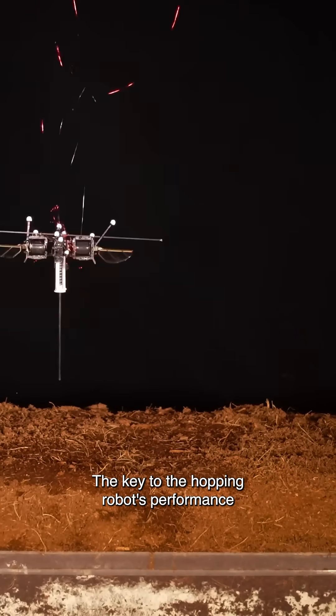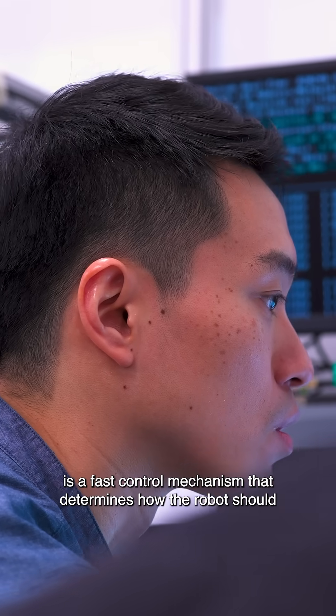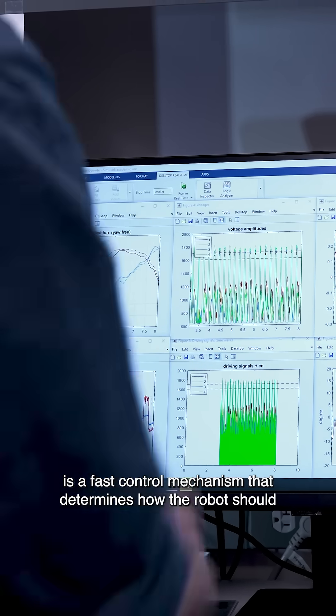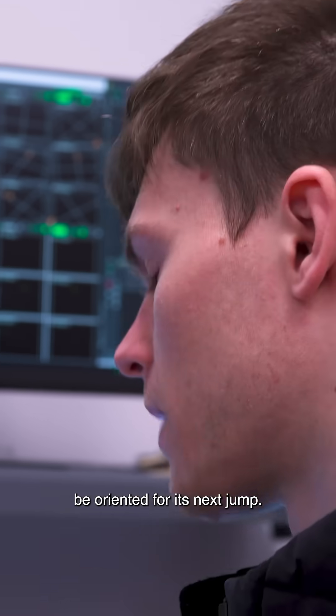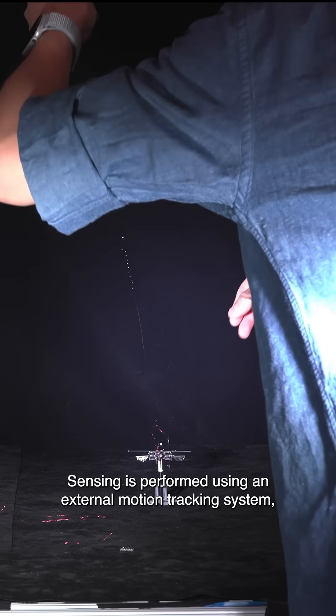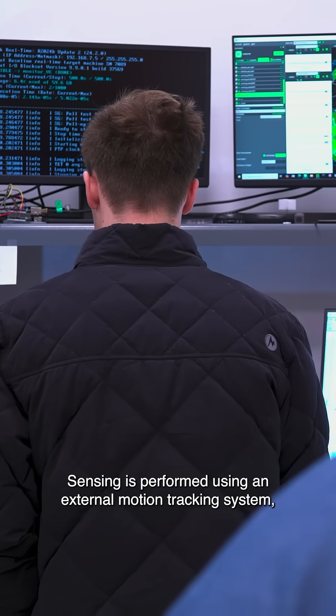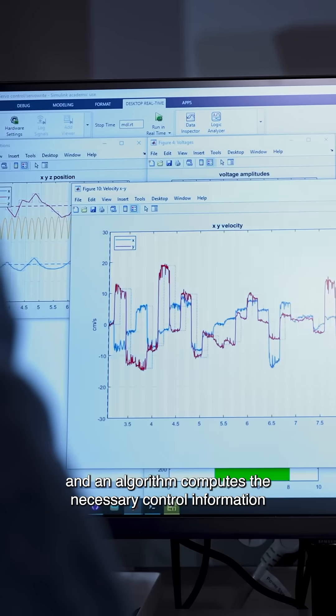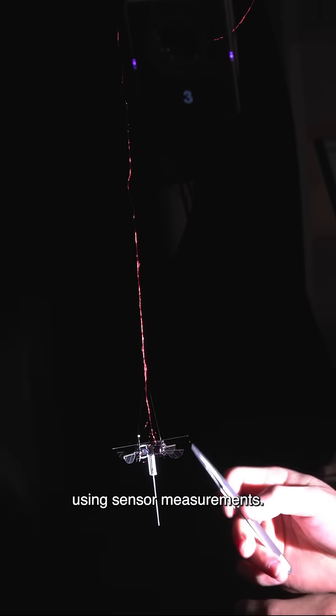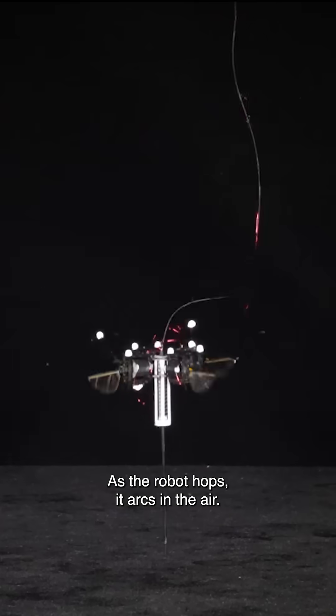The key to the hopping robot's performance is a fast control mechanism that determines how the robot should be oriented for its next jump. Sensing is performed using an external motion tracking system, and an algorithm computes the necessary control information using sensor measurements.